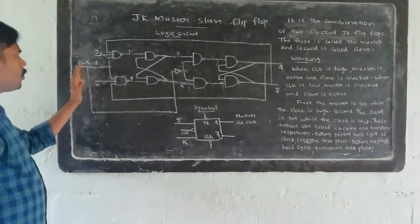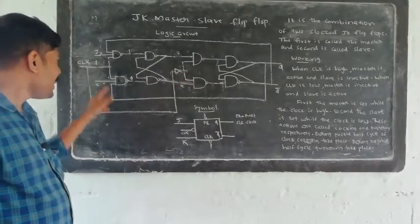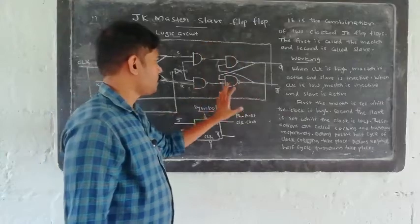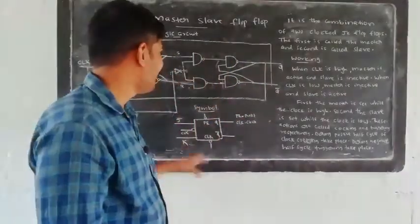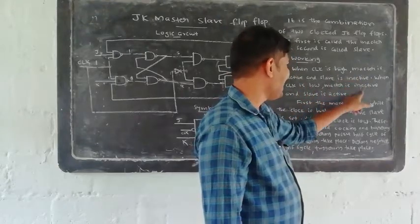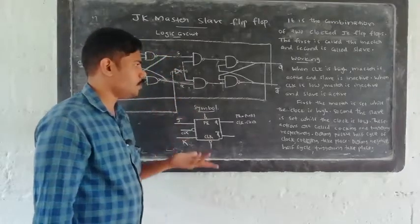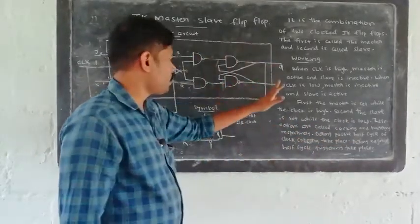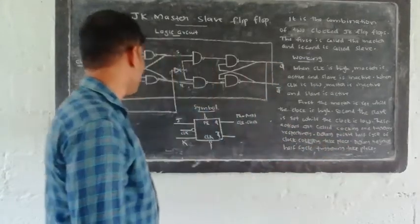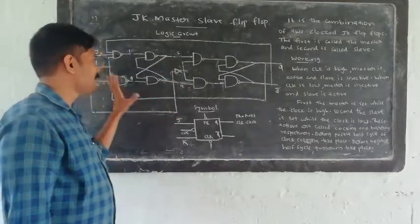When the clock is low, the master is inactive and S and R do not change for the master. But when clock is zero, the slave is active, and if S and R change, operations occur simultaneously. When clock is low, master is inactive and slave is active. It is said to be set, and its outputs S and R will be changed. This process is known as clocking.